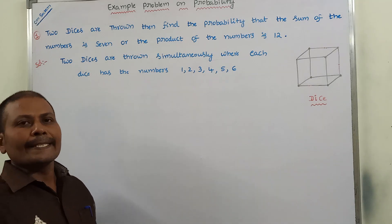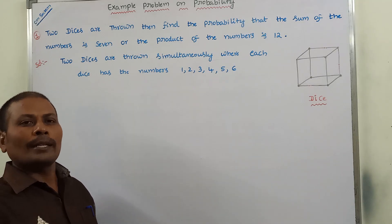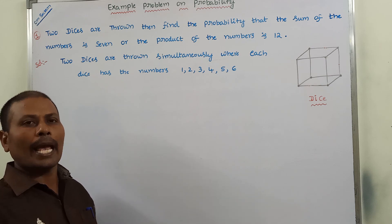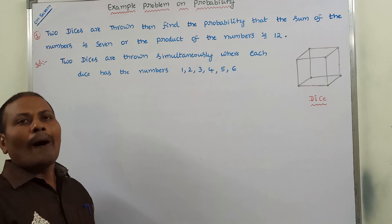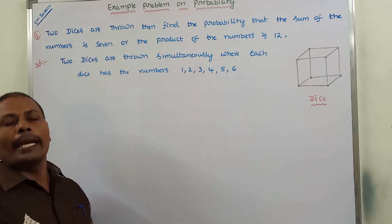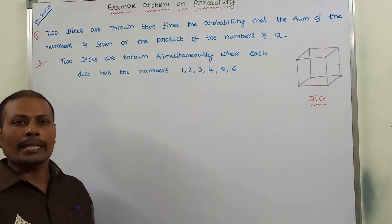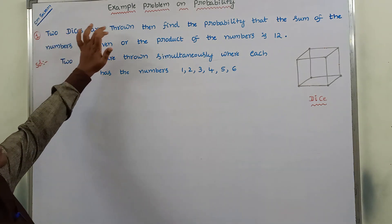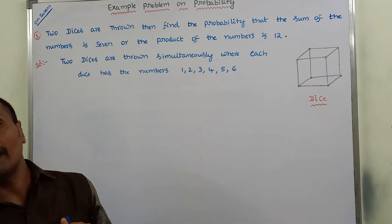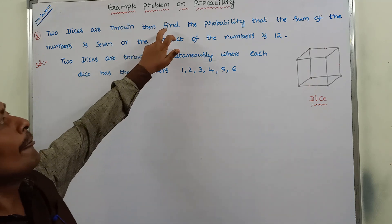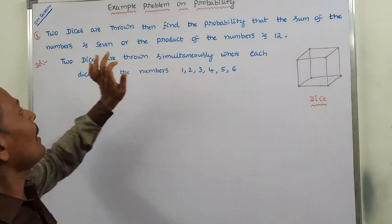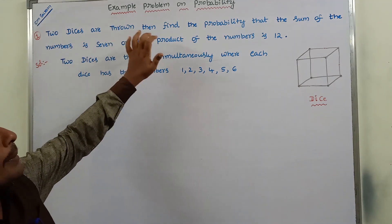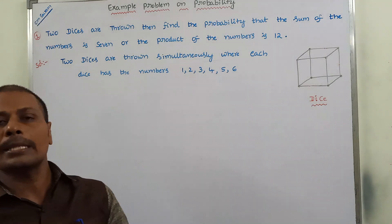Hi friends, welcome back to our YouTube channel. Today we have to discuss an example problem on probability in the probability and statistics course. The given problem is: two dice are thrown simultaneously, find the probability that the sum of the numbers is 7 or the product of the numbers is 12.